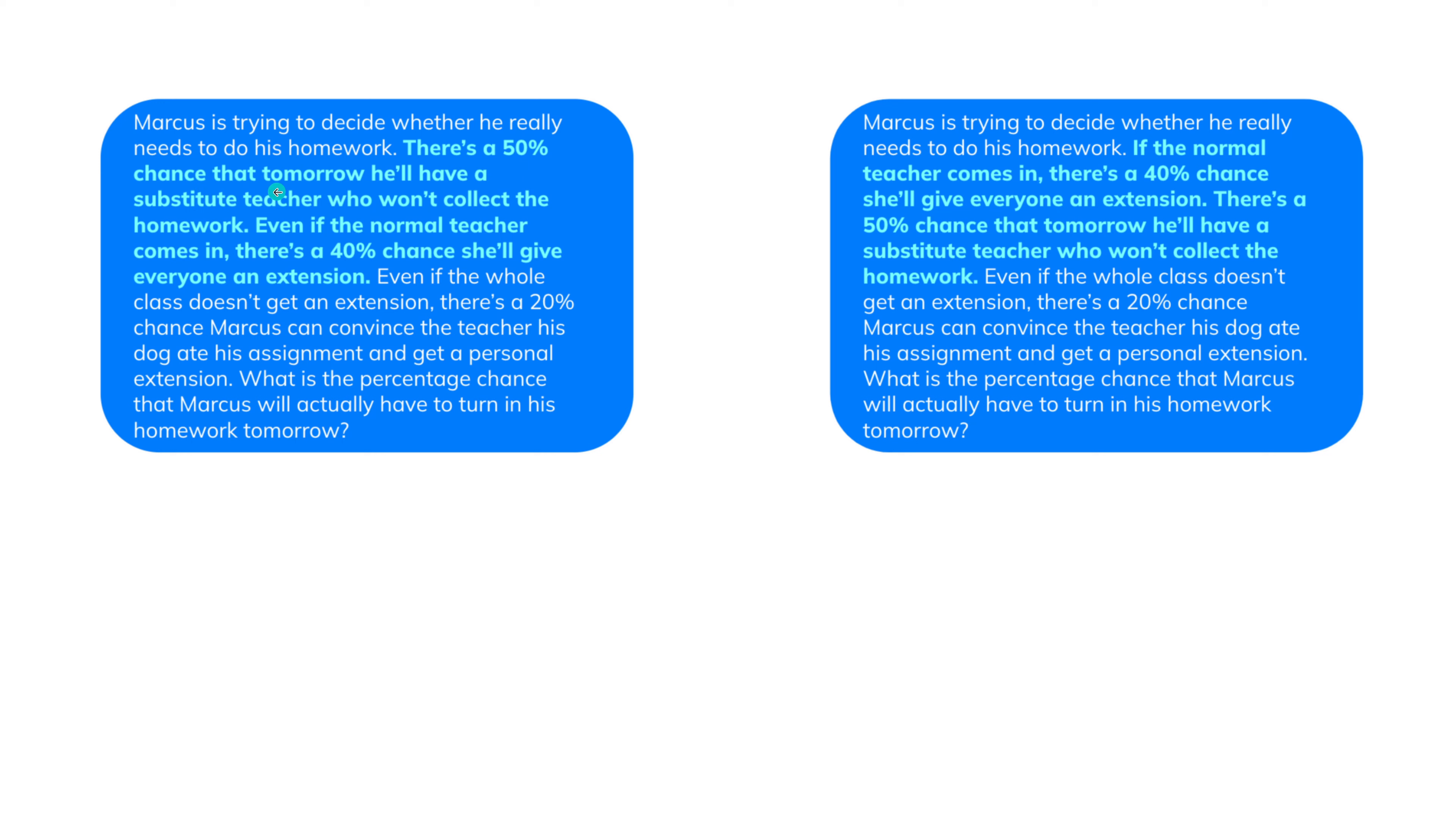First example we have: he has a 50% chance that tomorrow he will have a substitute teacher who won't collect the homework. Even if the normal teacher comes in, there's a 40% chance she will give everyone an extension. Or in the other text, the two sentences exchange their linear position. And you might assume there's no way that this will influence our logical reasoning path of our LLM. No way. And we go for the most beautiful, for the most intelligent LLM, GPT-4.